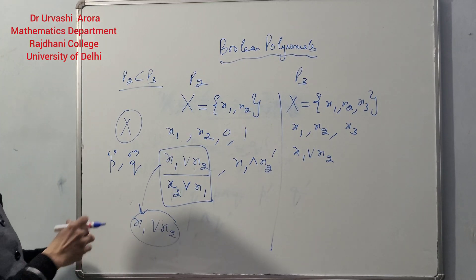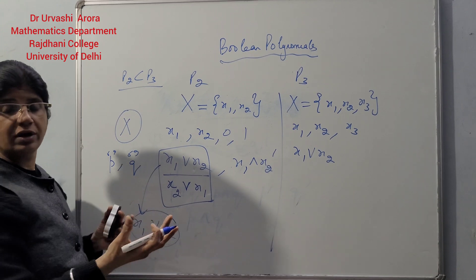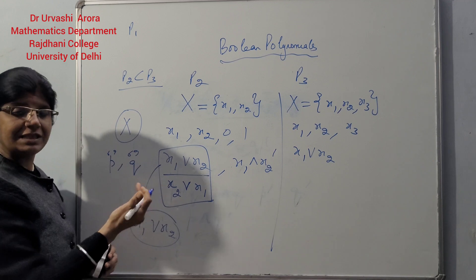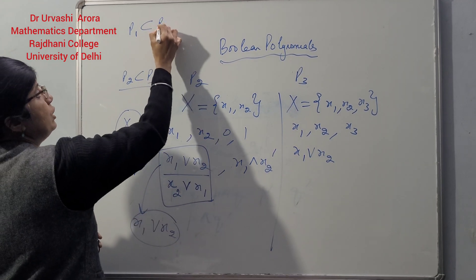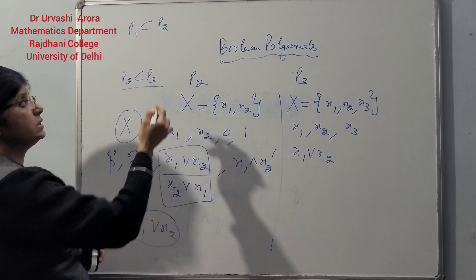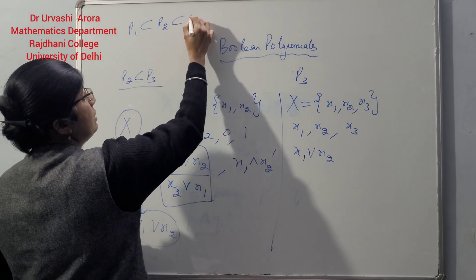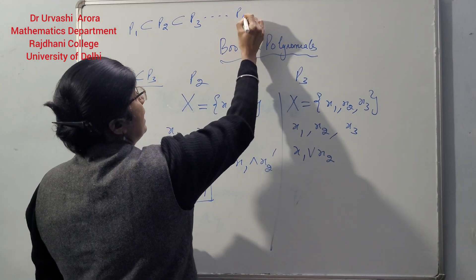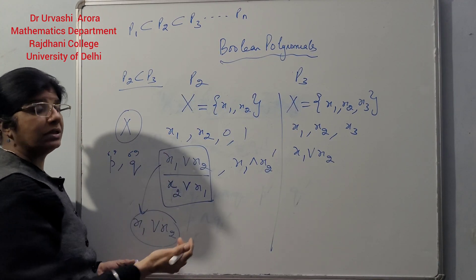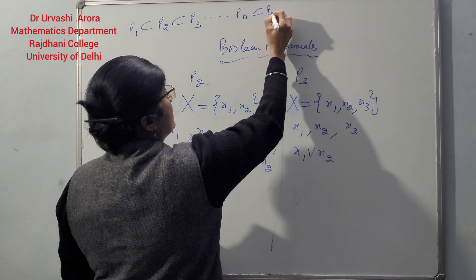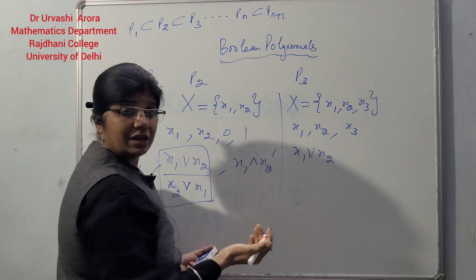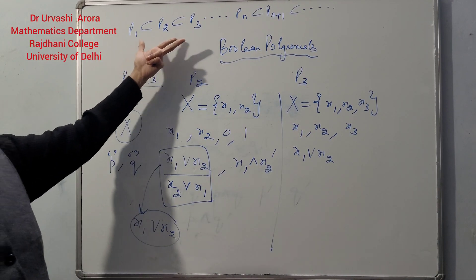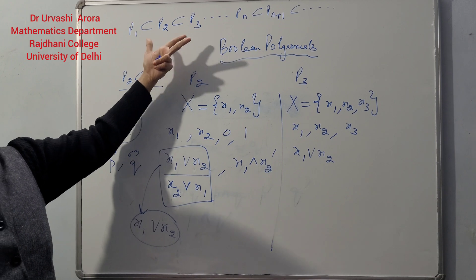So if we denote the set of all polynomials over the set of two symbols by P2, and the set of all Boolean polynomials over the set of three symbols by P3, then P2 is contained in P3. Generalizing this whole thing, we have P1 ⊆ P2 ⊆ P3, and in general Pn, the set of all Boolean polynomials over n symbols, is contained in Pn+1, the set of all Boolean polynomials over n+1 symbols, and so on. This is the relation between Boolean polynomials over sets of different symbols.